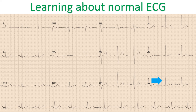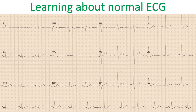ST segment is usually isoelectric throughout, though an upsloping ST in leads V1 and V2 is not uncommon. T wave in V6 is usually taller than in V1. Minimal upsloping ST depression seen in the inferior and lateral leads could represent the TA wave, or atrial repolarization wave.